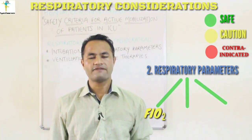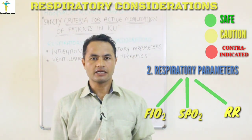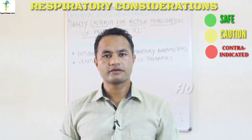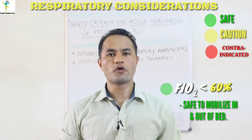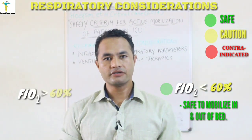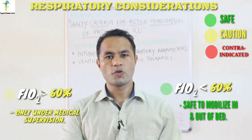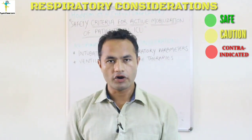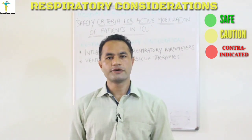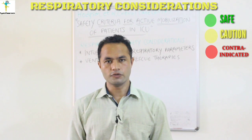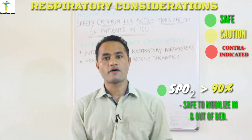The second respiratory consideration is divided into three parts: first is fraction of inspired oxygen or FiO2, second is percutaneous oxygen saturation or SpO2, and third is respiratory rate. Patients receiving FiO2 less than 60% can be mobilized in and out of the bed with no potential risks, whereas patients receiving FiO2 higher than 60% can be mobilized with sufficient medical supervision to avoid potential complications.